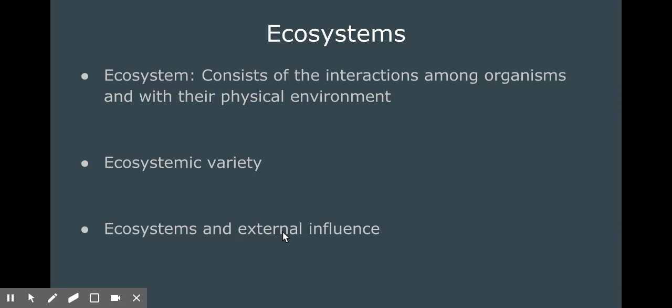In order to understand eutrophication you need to understand what an ecosystem is, because eutrophication is harmful mainly because it affects the stability of an aquatic ecosystem. As is written on the slide, an ecosystem consists of the interactions among organisms and with their physical environment. This could mean the relationship between a predator and its prey, or the relationship between a fish and the water in which it lives.